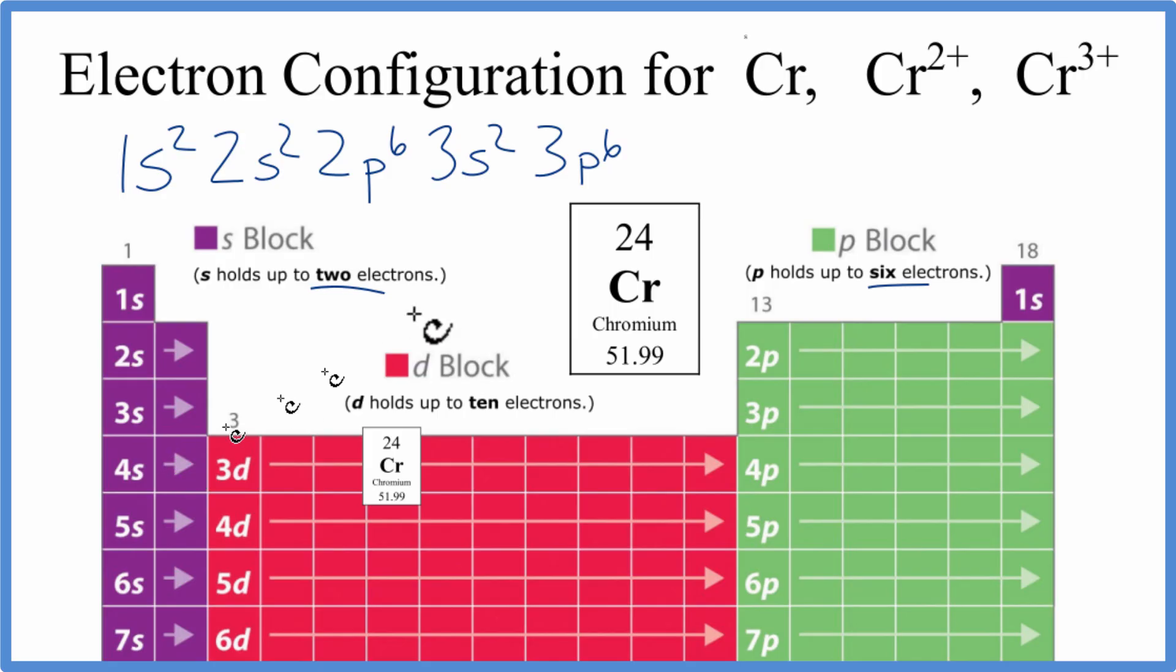Then we come to 4s2. Right now we've used a total of 20 electrons and we have 24. So the next up is the 3d. D can hold up to 10, but we already have 20, so we only need 4 more. So we'll just put 4 in the d orbital here.